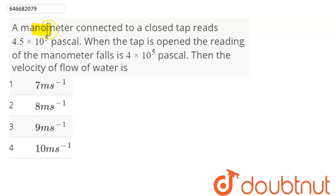Question is: a manometer connected to a closed tap reads 4.5 × 10^5 pascal. When the tap is opened, the reading of the manometer falls to 4 × 10^5 pascal. Then the velocity of flow of water is